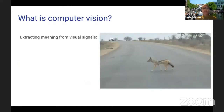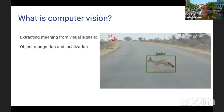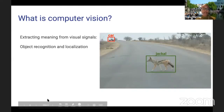Given an image, you might ask: what are certain objects of interest within this image, and where are they? You'd like to localize them with, for example, a bounding box, as you can see here.